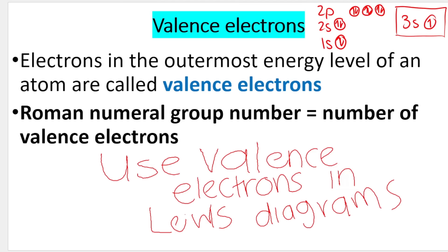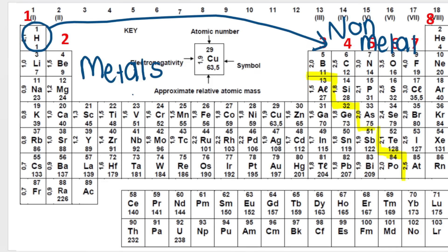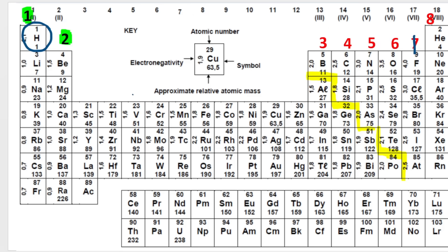We get the valence electrons, also called the outer electrons, from our periodic table using the Roman group numerals. Looking at the periodic table, the big red numbers correspond to the Roman group numerals — one, two, three, four, five, and so on. That number is the number of valence electrons for that particular atom. So sodium has one valence electron, aluminum has three valence electrons, and so on.